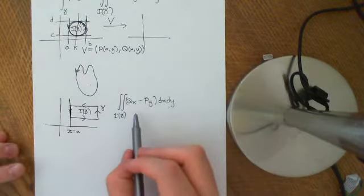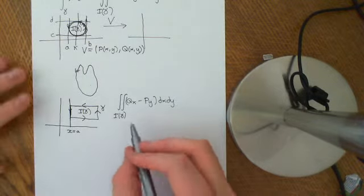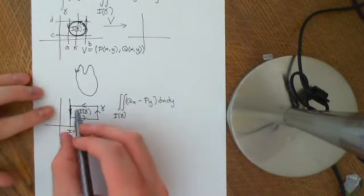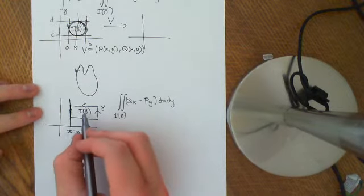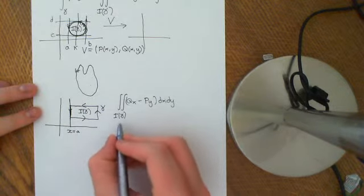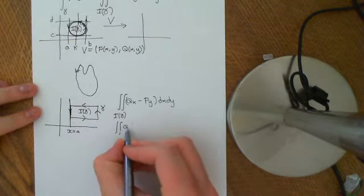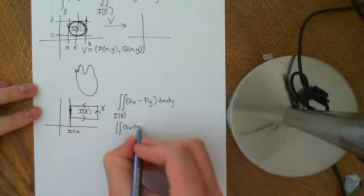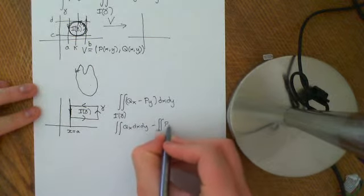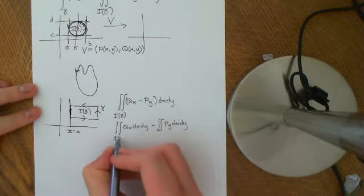If we consider the integral that appears in Green's theorem, what we want to do is integrate it over the inside of the curve gamma. We could split it up into two integrals: the integral of qx dx dy minus the integral of py dx dy, both over the inside of gamma.